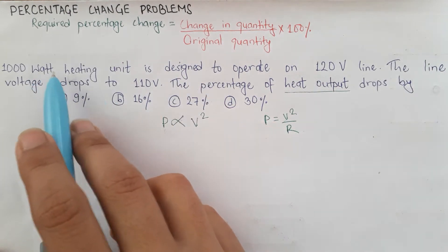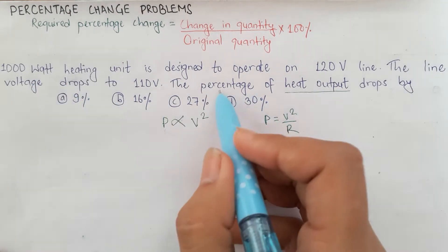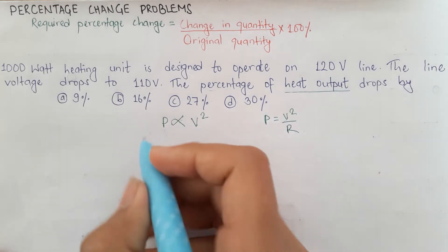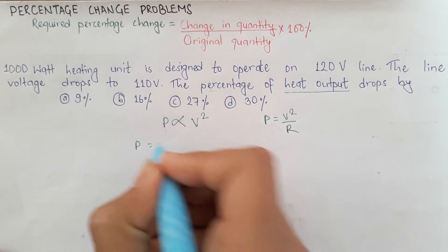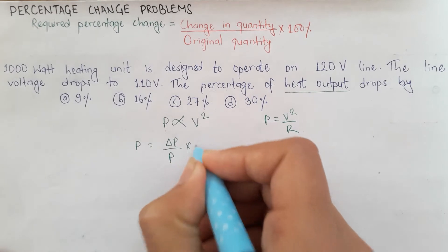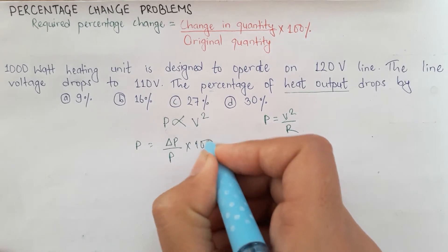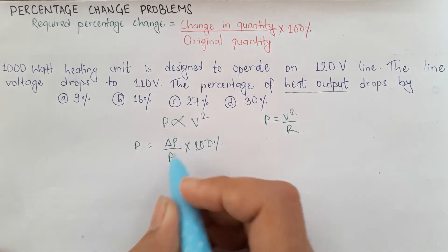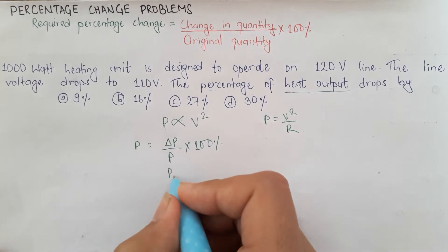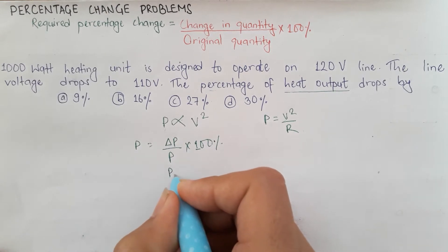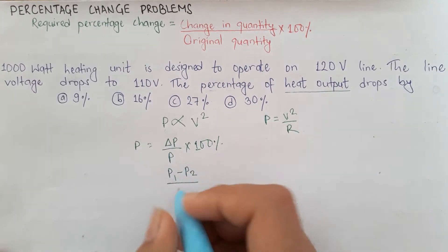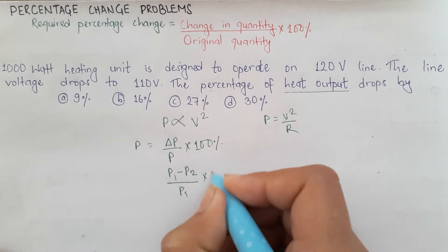To find the percentage change of heat output, we use: percentage change = ΔP/P × 100%. Here, ΔP means original power P1 minus new power P2, divided by P1, into 100%.